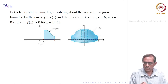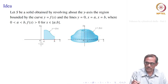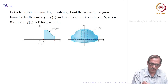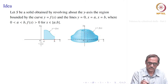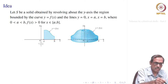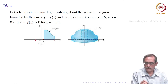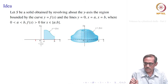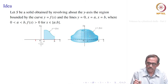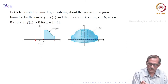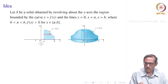Once this region is revolved, we obtain a solid — shown in the second picture — and it has a hole. The hole is a cylindrical hole generated from minus a to a. For this solid, we could use the Washer method as before, but instead we want to apply another idea.